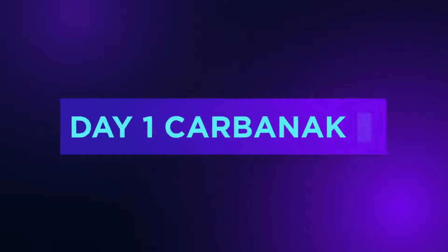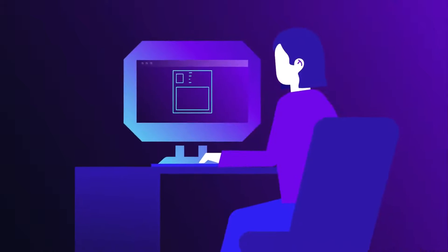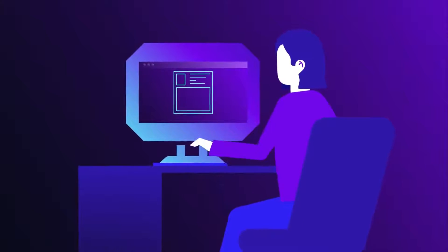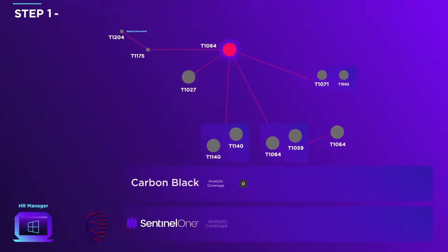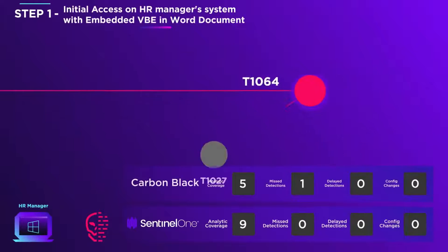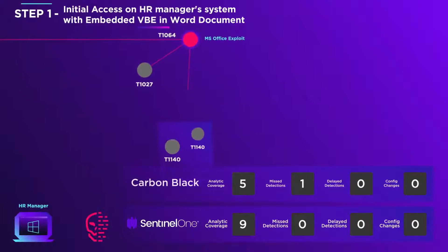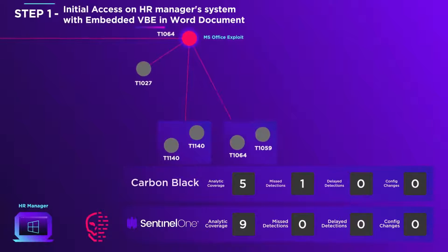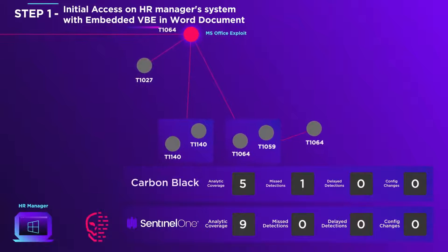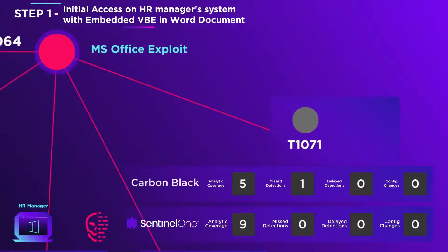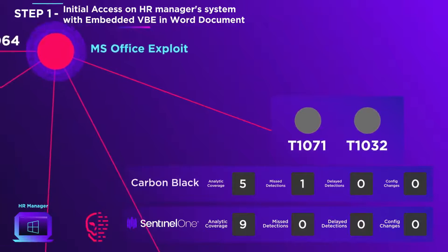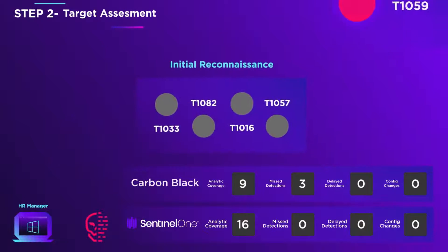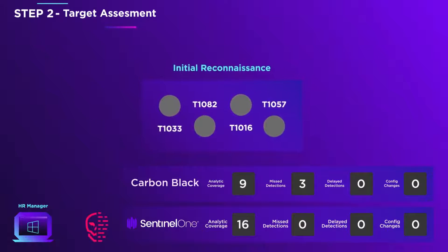Day 1 starts with the Carbonac adversary group's ATT&CK methodology. The initial breach occurs on the HR manager's PC when she opens a tainted Word document that contains an encoded script designed to misuse Microsoft Office. The script is stealthy and creates other scripts from content within the evil document. Covert communication begins with the adversary's command and control system, also known as the C2. The adversary performs reconnaissance to learn vital information about the environment.